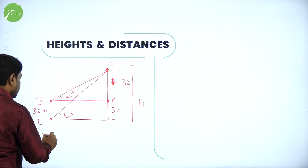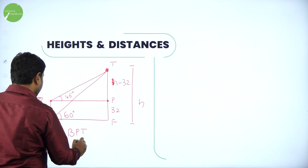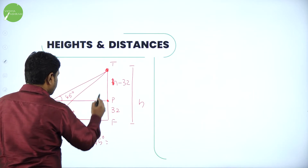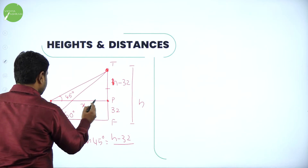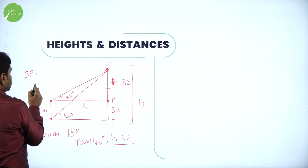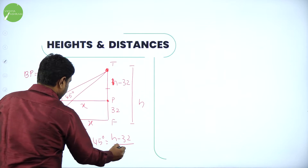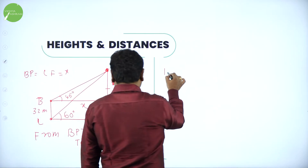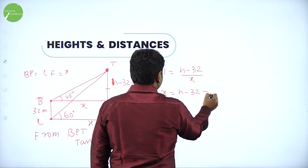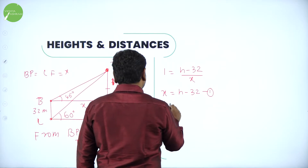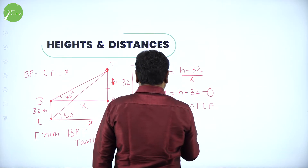From triangle BPT, tan 45 degrees equals opposite over adjacent, which is (H minus 32) divided by x. Tan 45 is 1, so 1 equals (H minus 32) over x. Rearranging, x equals H minus 32. Call this equation 1.